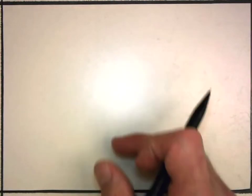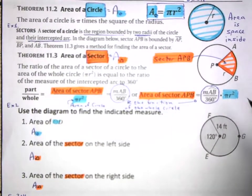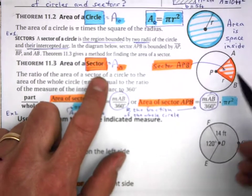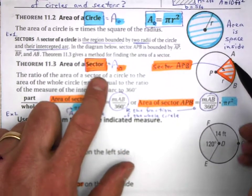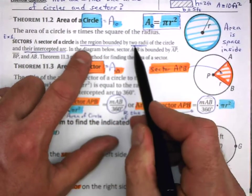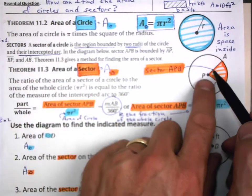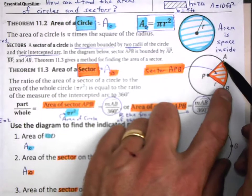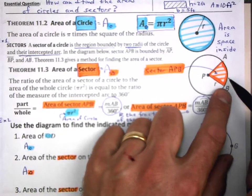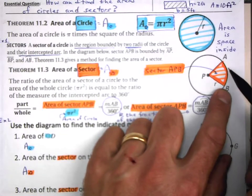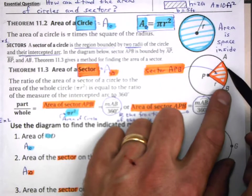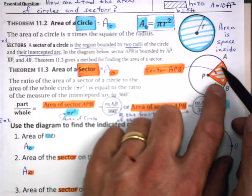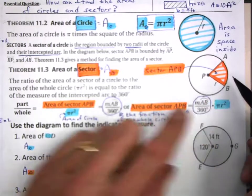We are ready now to talk about sectors. A sector is a part of a circle — a region bounded by two radii and their intercepted arc. Here are the two radii intercepting this part of the circle. This space bounded by the two radii and this arc is called a sector.